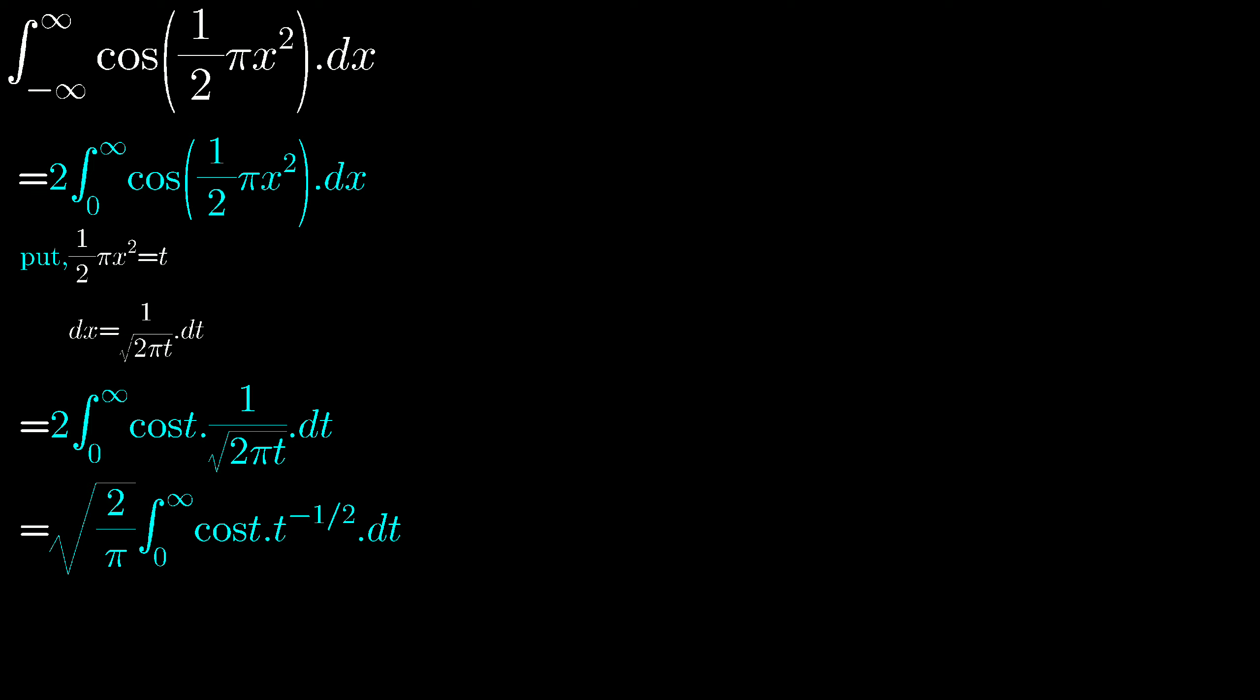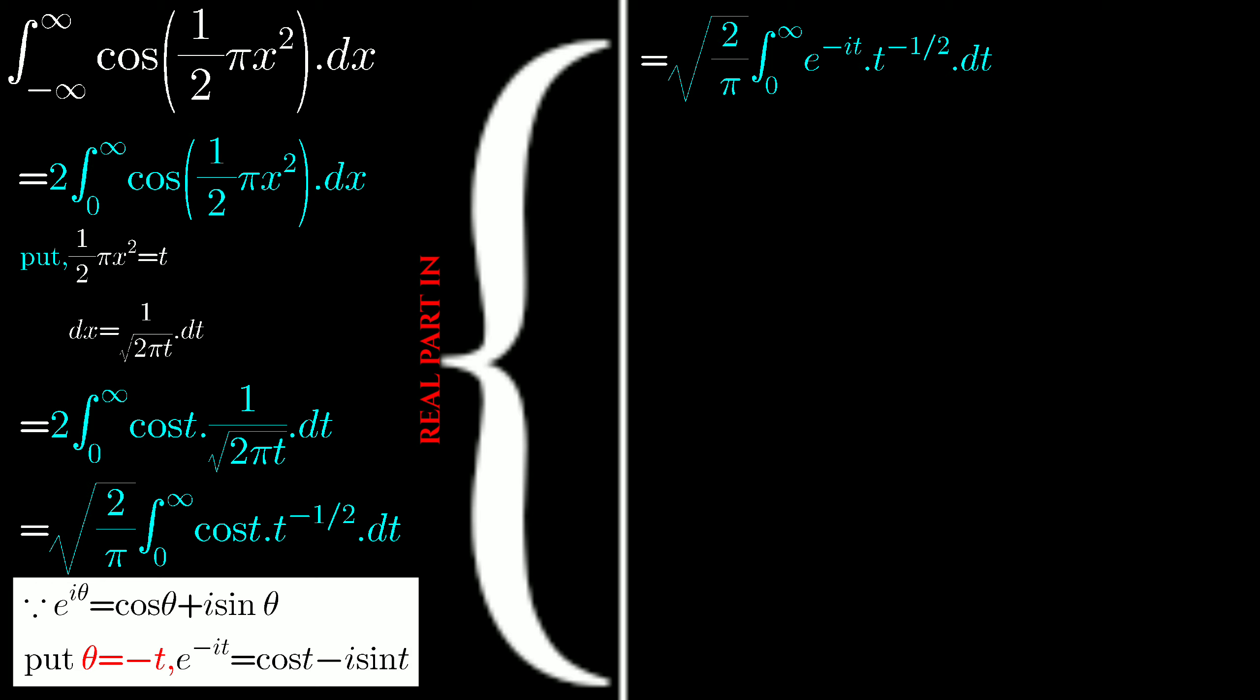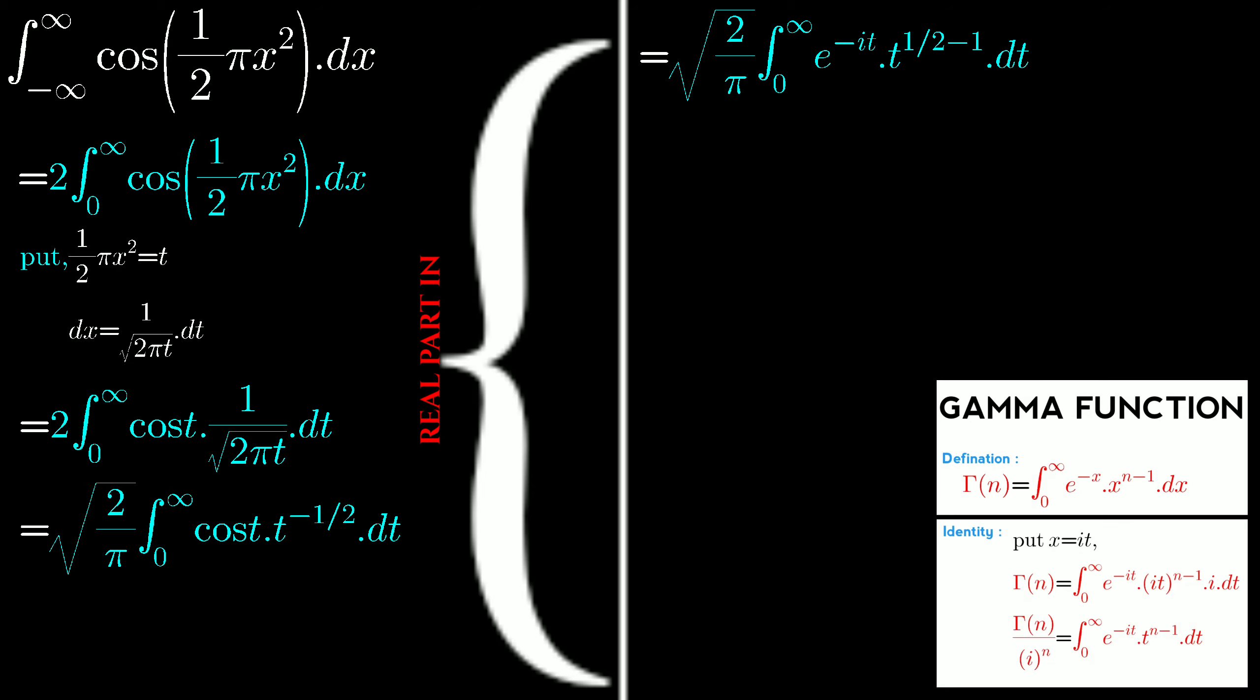e^(iθ) = cos θ + i sin θ. Here, can't you see this integral is trying to say, and if we put x = it in the definition of gamma function, by this we get an identity.